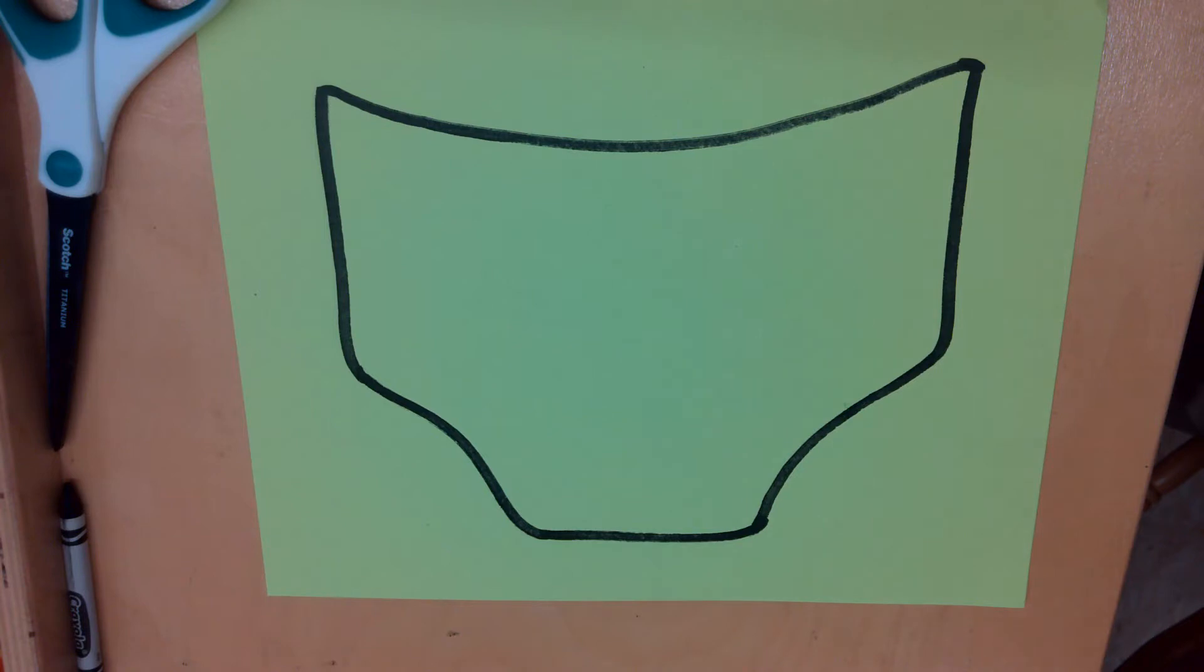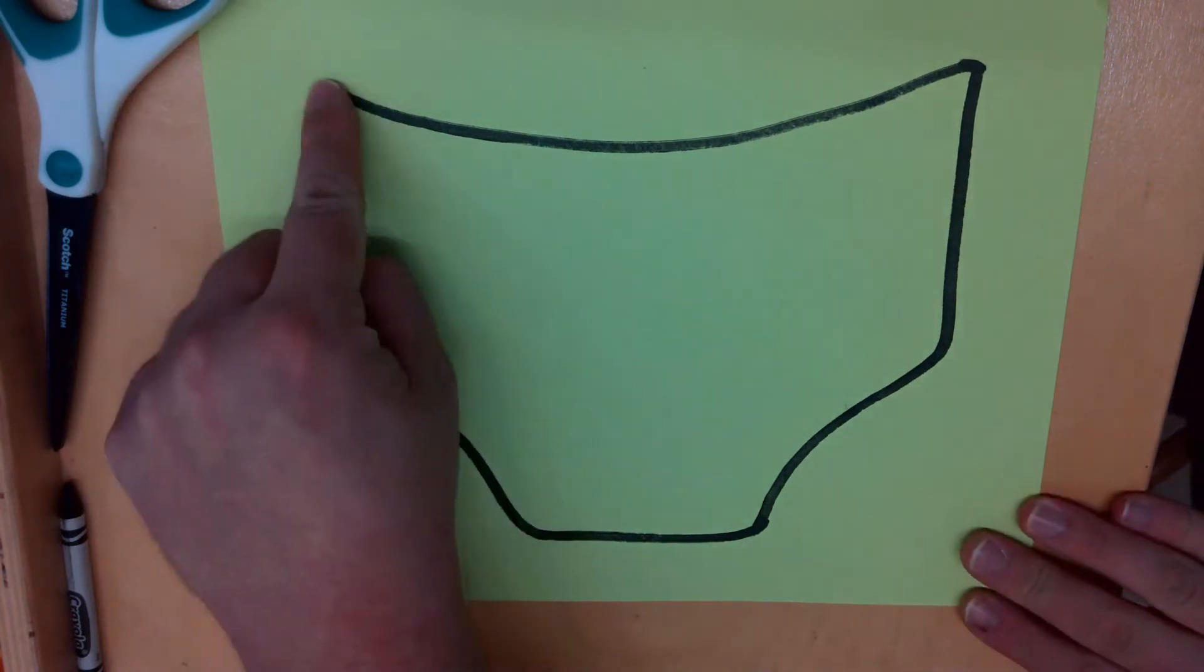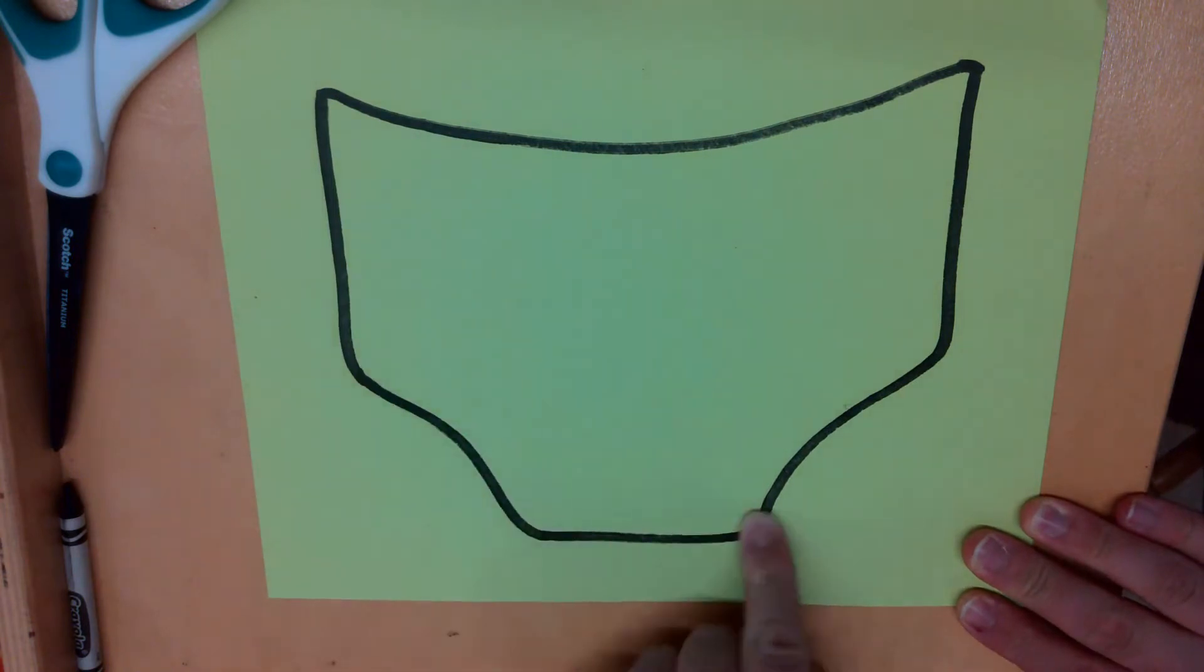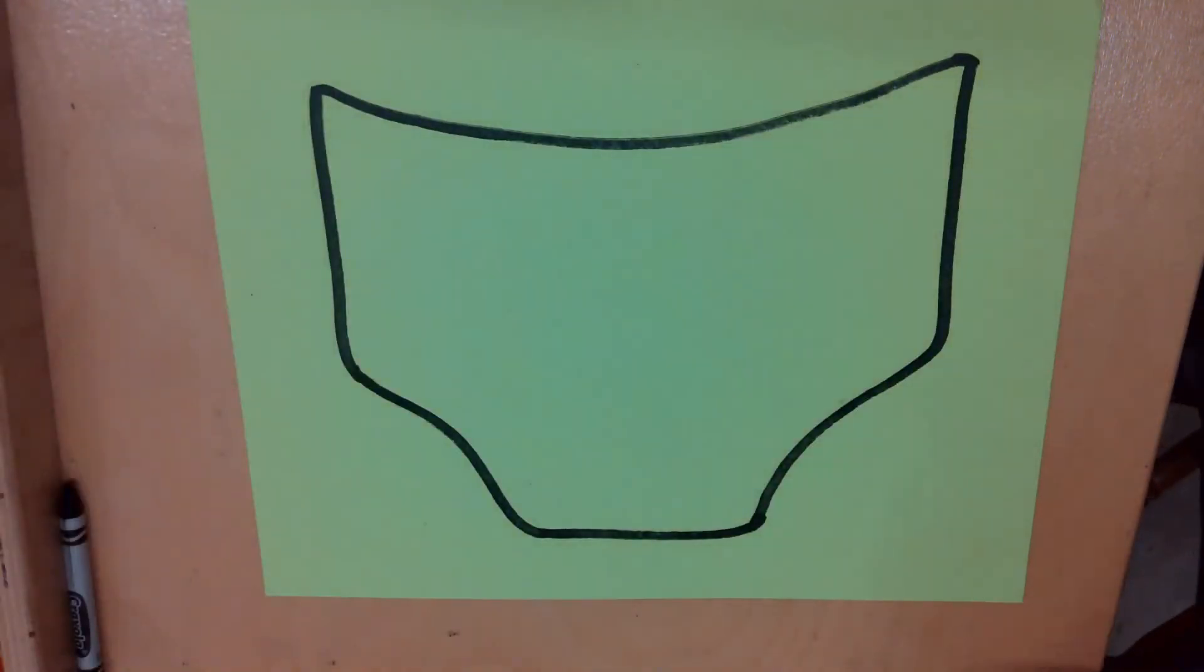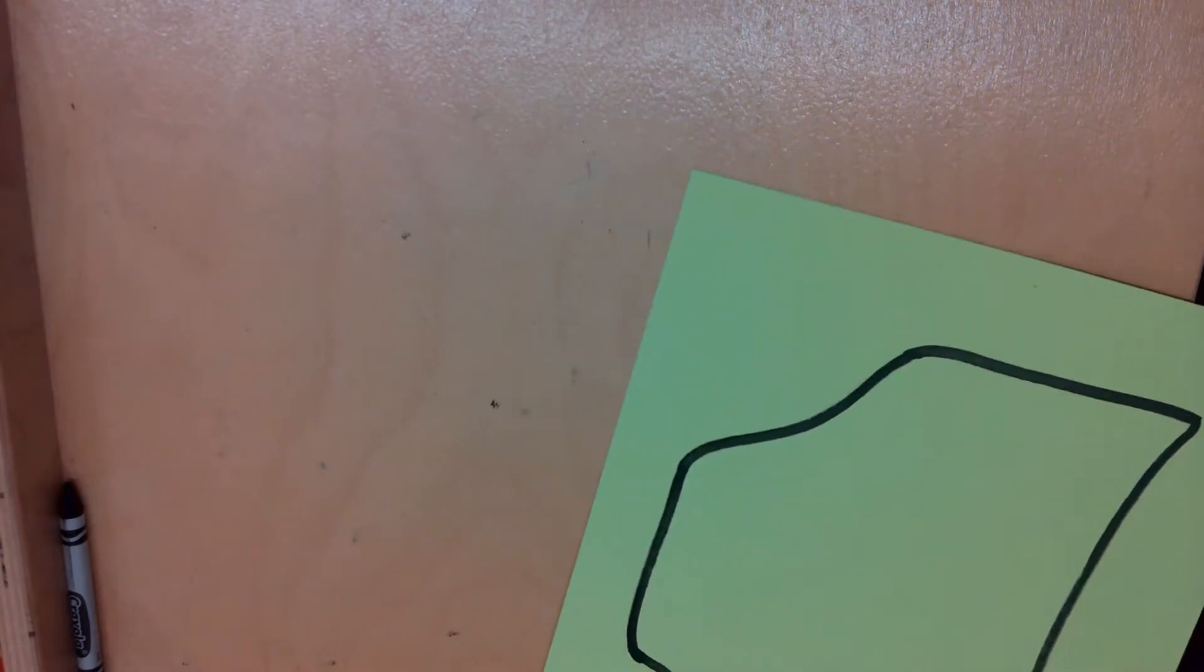We are going to start by cutting on the black line for our underwear. So get your pair of scissors and begin cutting on the line. Try your best to cut on the black line. If it doesn't come out perfectly, that's okay! As long as you try your best!